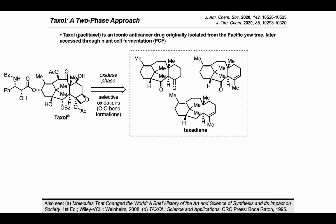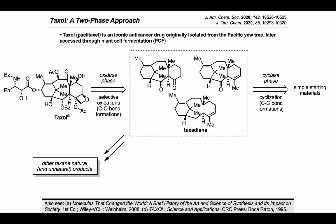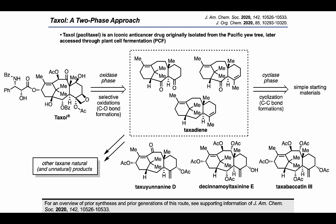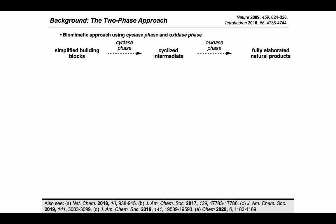These intermediates could be accessed through a separate cyclase phase, which can be imagined as a sequence of chemical transformations focused on carbon-carbon bond formation and construction of the desired ring system. Together, the cyclase phase and oxidase phase comprise the two-phase approach, taking inspiration from how terpene natural products are synthesized in nature. One distinct advantage of this approach is that once we've reached intermediates through the cyclase phase, they may be carried on in different directions to access diverse natural and unnatural products — in this case taxanes, for example taxaunanine D, D-cinnamoyl taxanine E, and taxibacadine 3.